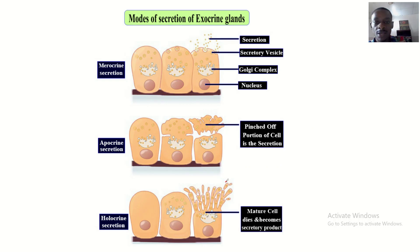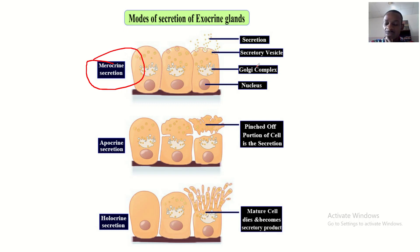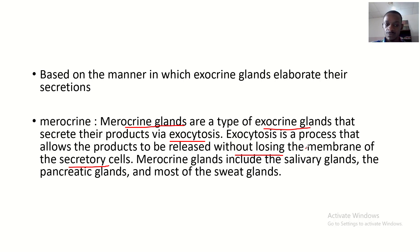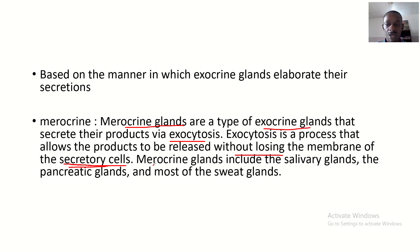Note that merocrine glands — examples include the salivary glands and the sweat glands. The striking feature of merocrine glands is that they allow products to be released without losing the membrane of the secretory cells.